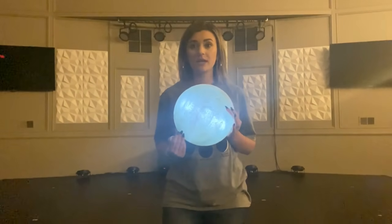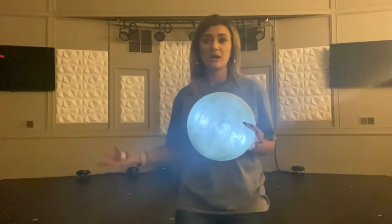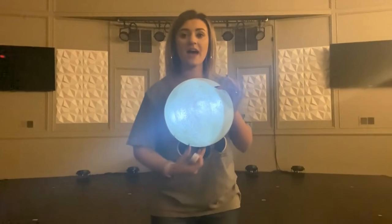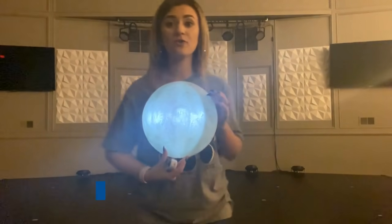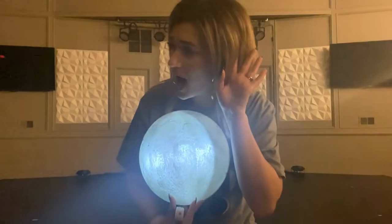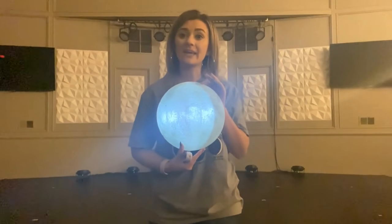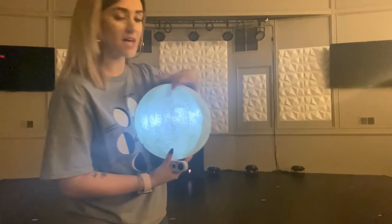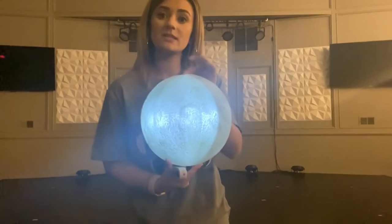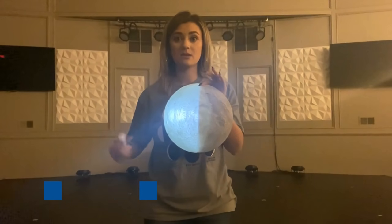After a full moon it's going to get smaller. We said waxing means getting larger, but waning means getting smaller. So after a full moon we get a waning gibbous. In a waning moon the left side of the moon is lit up while the dark side we cannot see. This is what a waning gibbous looks like.